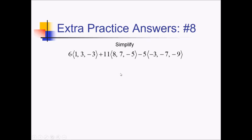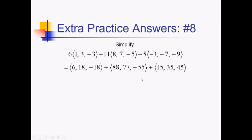For this problem, it looks a little bit scary, but let's start by distributing all these factors out in front. We have 6 distributed to the first vector — that's going to be (6, 18, negative 18). Distributing 11 to the next one, we've got (88, 77, negative 55). And I'm going to distribute negative 5, writing it as a plus outside with (15, 35, 45) inside. Now I have to add all the x's, y's, and z's. 6 plus 88 is 94, plus 15 is 109. Next, 18 plus 77 would be 95, plus 35 is 130. And finally, negative 18 plus negative 55 is negative 73, plus 45 is negative 28.